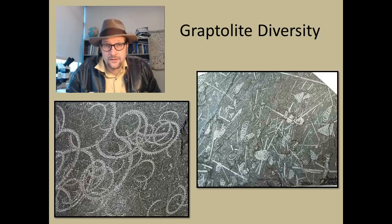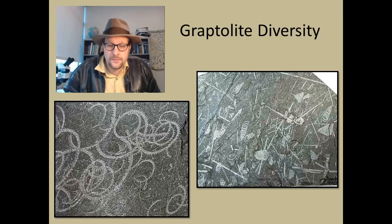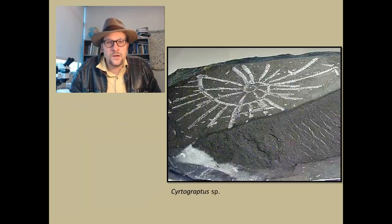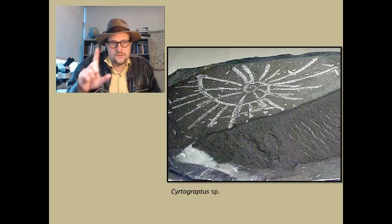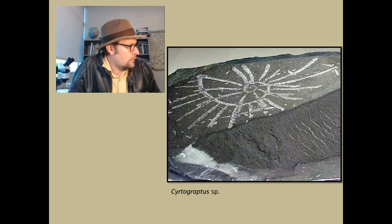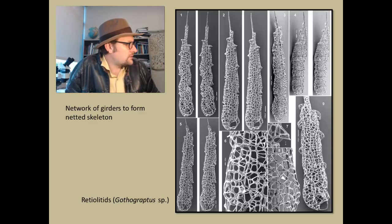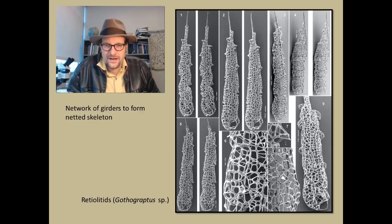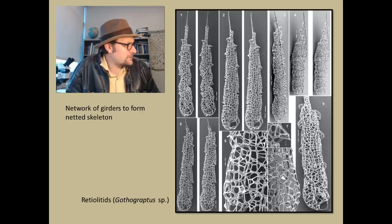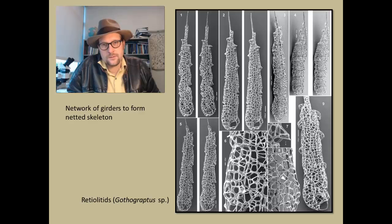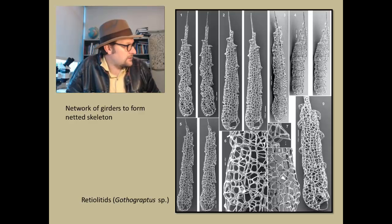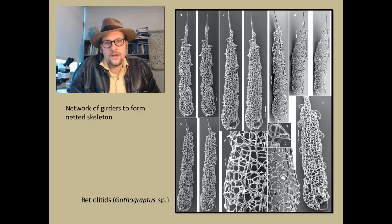Most of these really bizarre graptolites were planktonic — they floated around, and that's how they got into black shales: they would sink down onto the ocean floor and get buried fairly quickly. A favorite example is Criteographias, which has spirals and straight edges coming off these colonial organisms, thought to have floated planktonically. Some are really bizarre, like the retiolites — Gothiographis — forming an intricate network of little openings that probably housed individual zooids, a colonial organism on a stalk with a netted collagen skeleton prepared using acid to leave behind the original organic material.